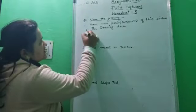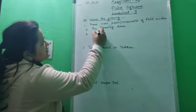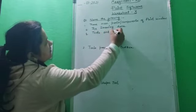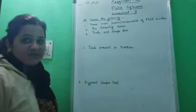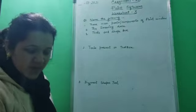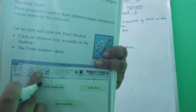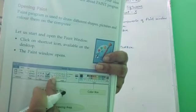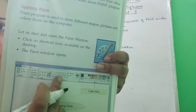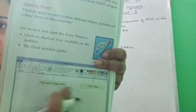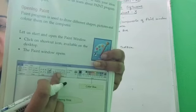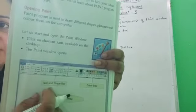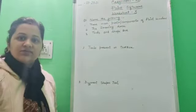The next part is tools and shape box. Here the box in which the different tools are present is known as the tool box, and here you can see different shapes. With these shape tools, we can draw various shapes on the drawing area. So the next important part of paint window is tool and shape box, and with the help of these tools we draw different things on the drawing area.